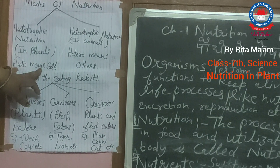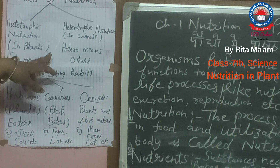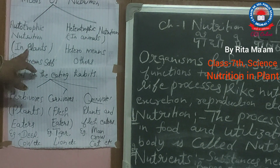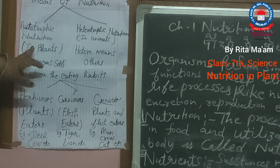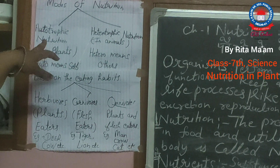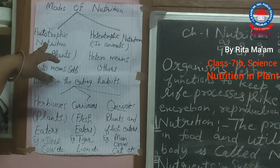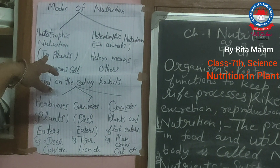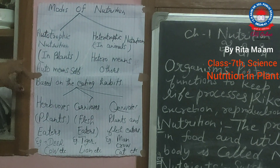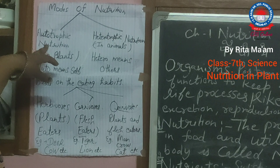Auto means self. In this category, plants are included. Plants prepare their food by the process of photosynthesis. Plants have a green pigment called chlorophyll. Chlorophyll absorbs the light of the sun and helps the plant to prepare food in the presence of carbon dioxide and water, and food is prepared in the form of carbohydrates.